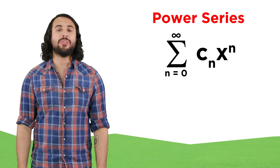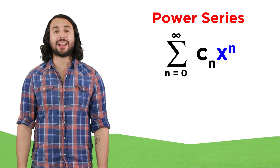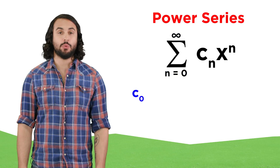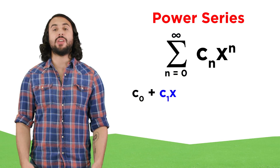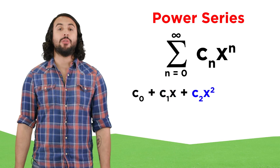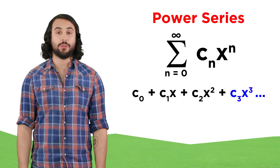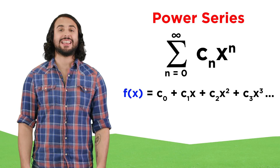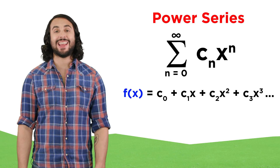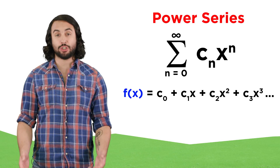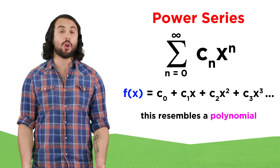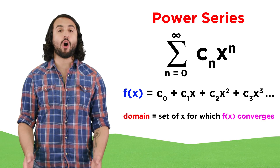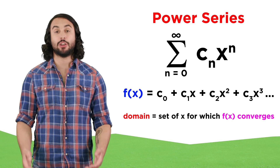A power series is one that takes the form c sub n times x to the n power, from zero to infinity. So we get c zero first, with no x, because x to the zero is one. Then the next term is c one times x, then c two times x squared, and so forth. The c's are constants that we call coefficients, and the sum of this series can be represented by a function f of x, where we just add up all the terms, resulting in what looks like a polynomial with infinitely many terms. The domain of this function is the set of all x values for which this series converges.